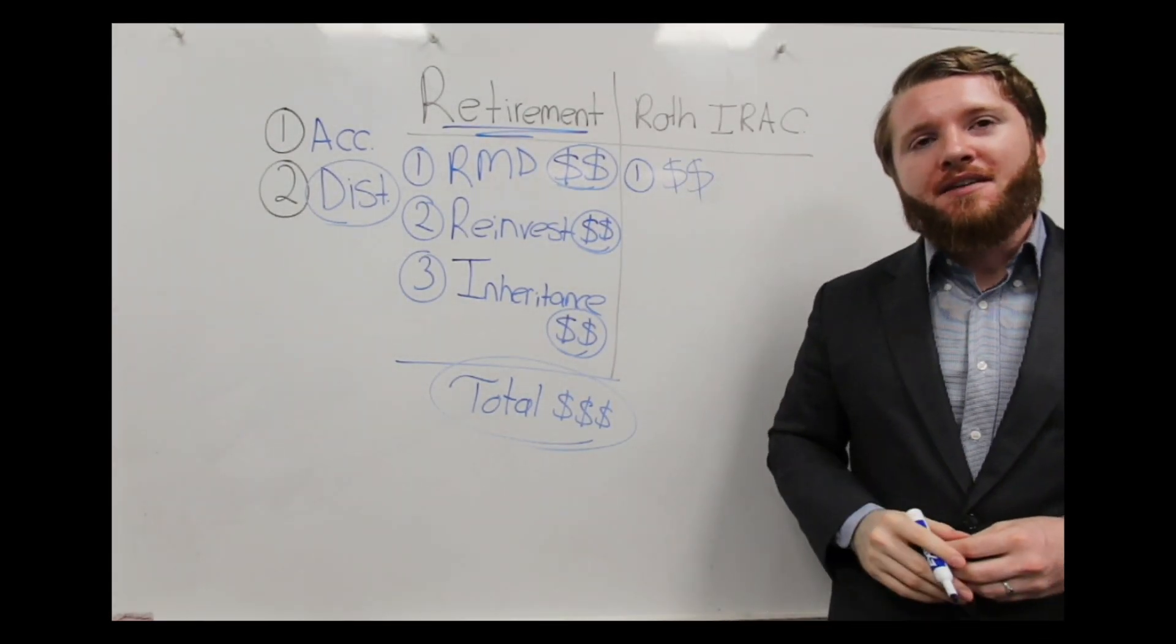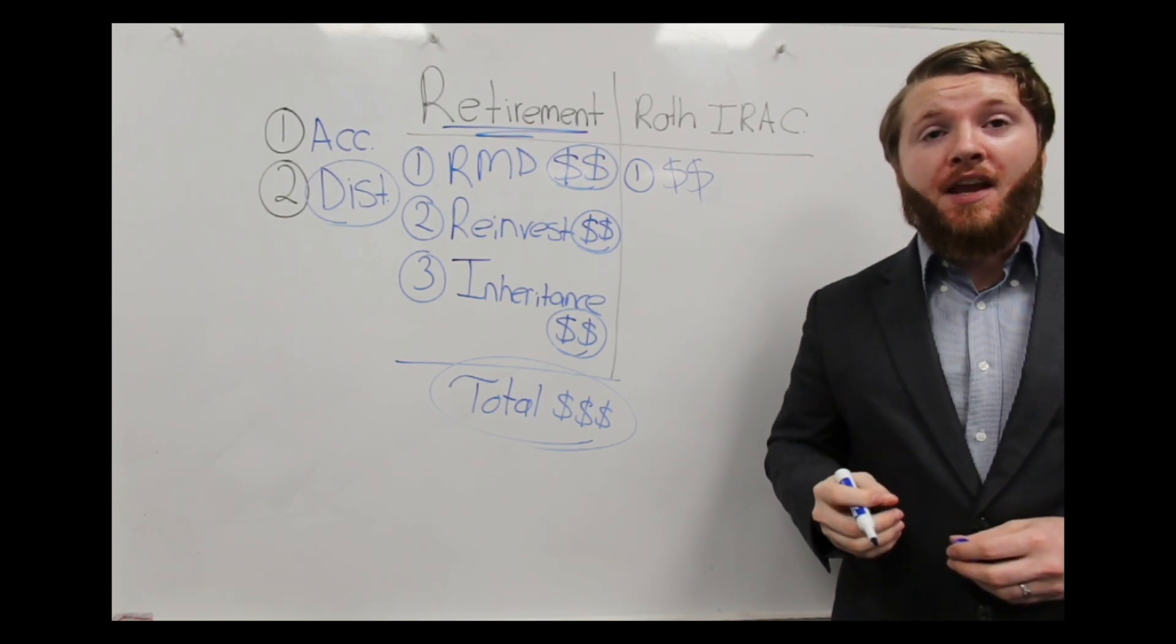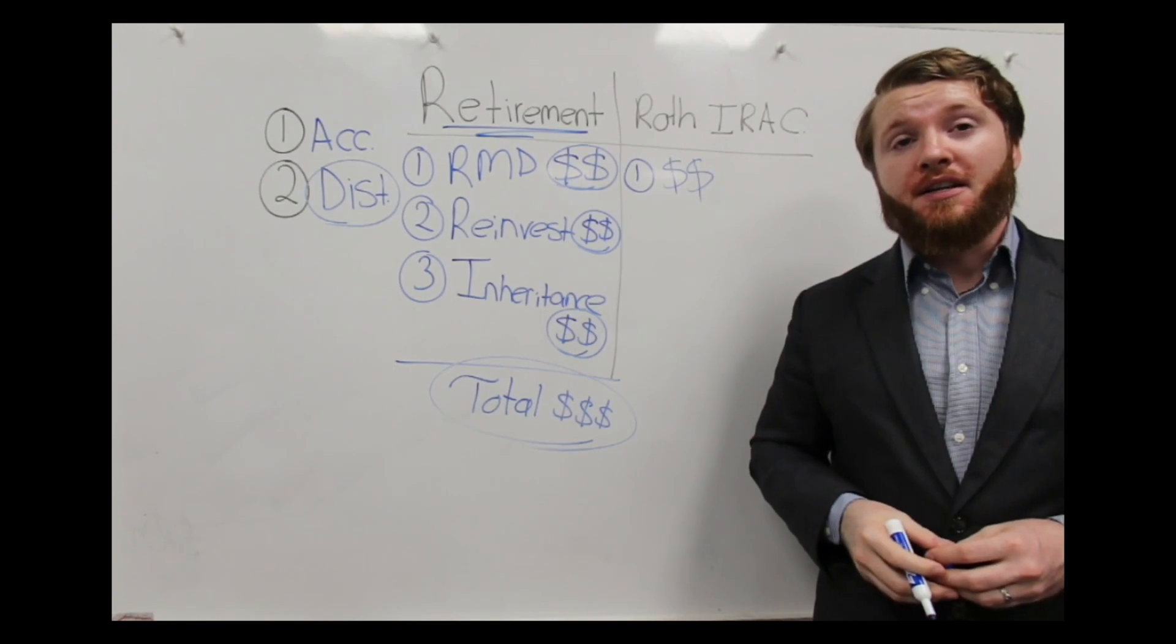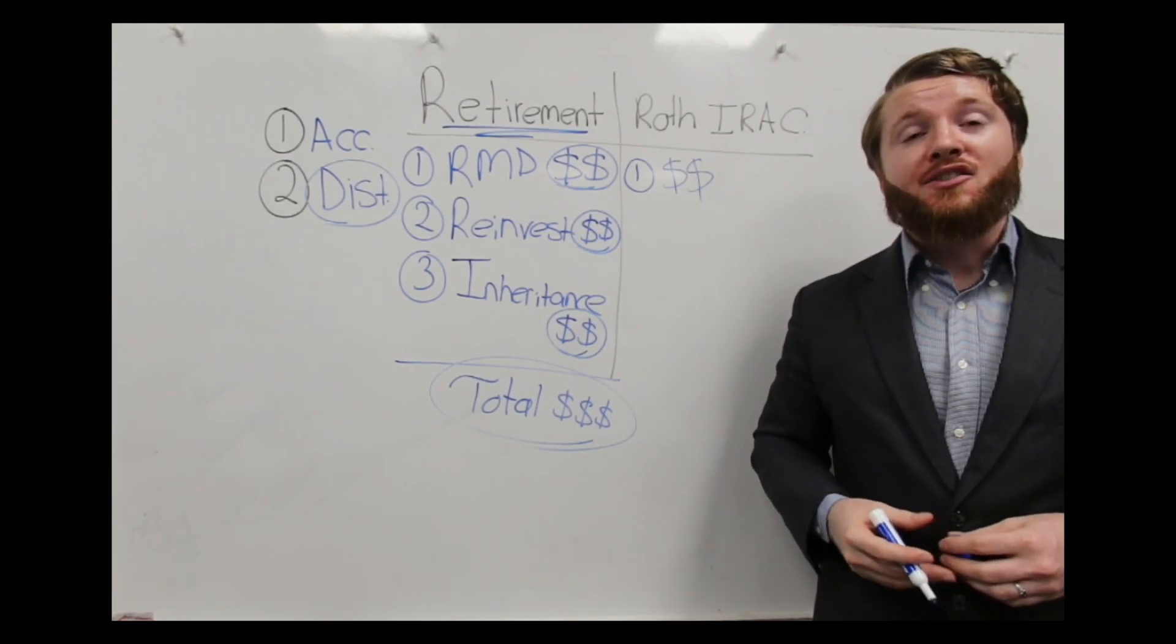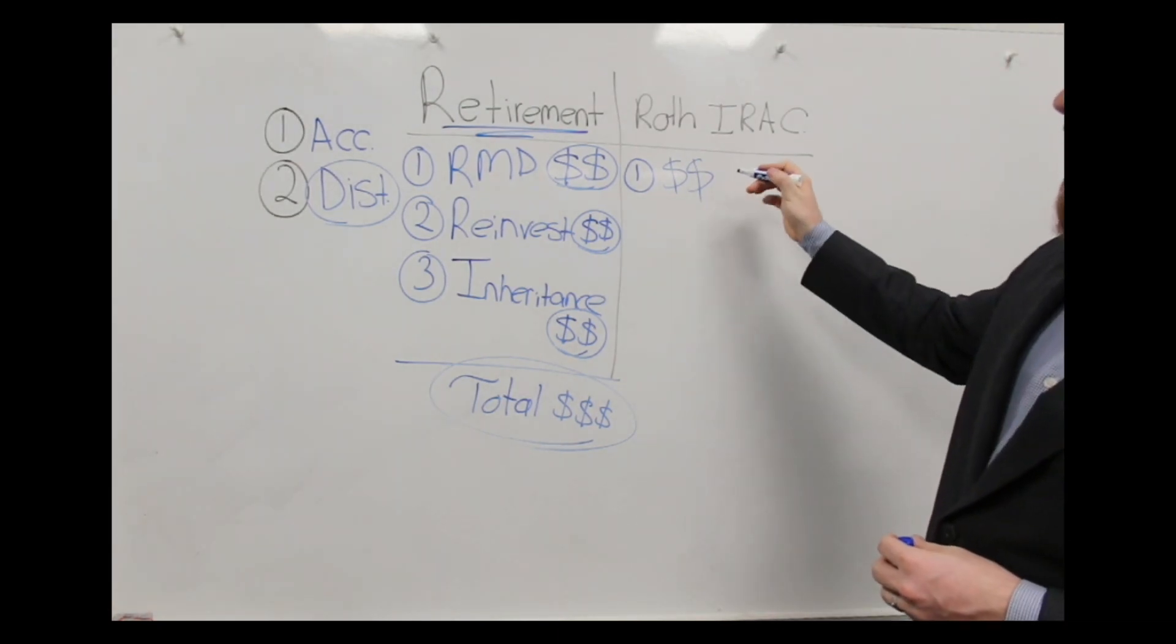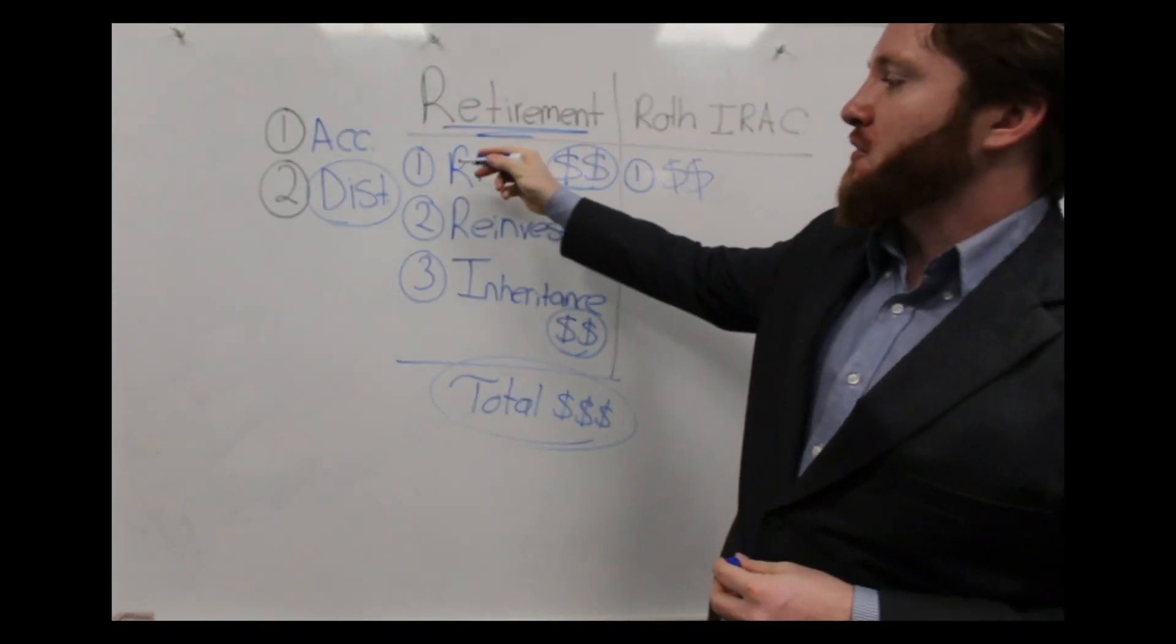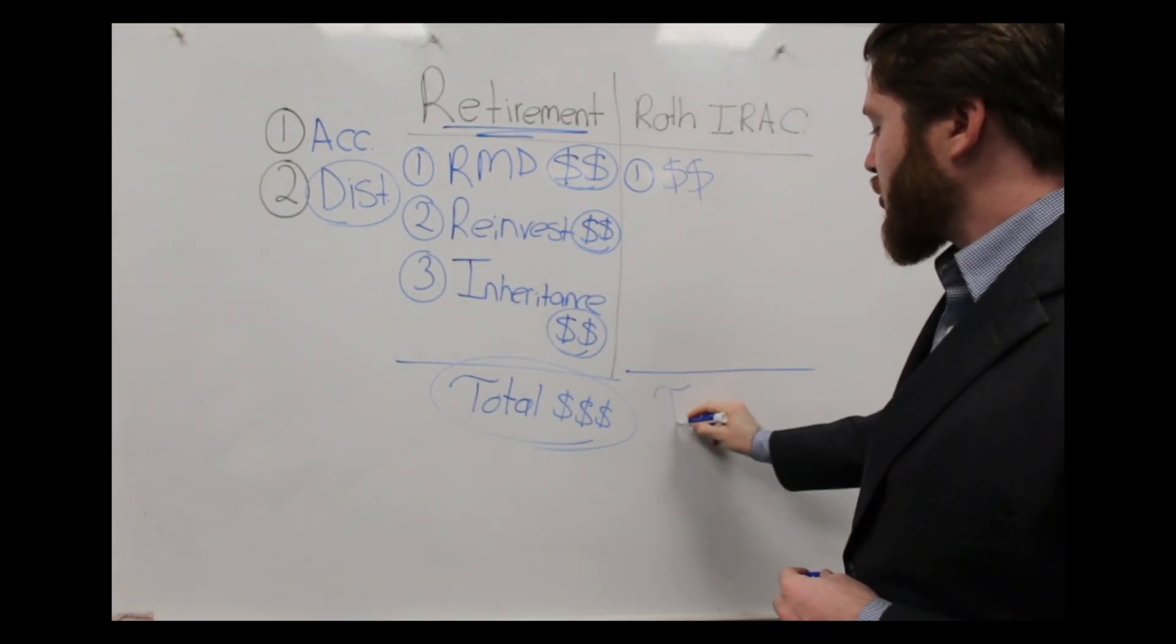But once you do that, you don't have any RMDs. The growth inside that account, meaning the dividends and interest, are also tax-free if certain requirements are met. And when you leave an inheritance, it's also tax-free. So inside a Roth IRA, you pay one tax bill versus three. And we'll also get a total over here.